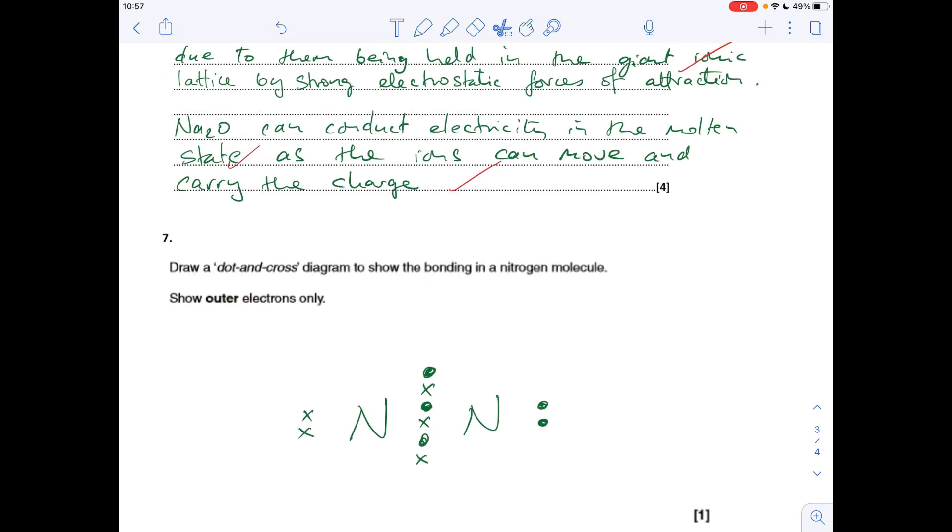Question seven. We've got the nitrogen molecule, obviously that's N2, and it has a triple covalent bond between the ends, so you basically need three of each type of electron in the overlap.